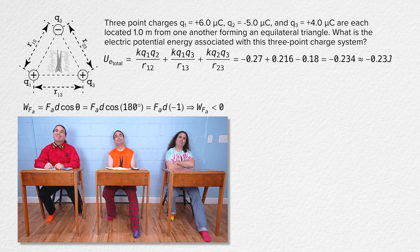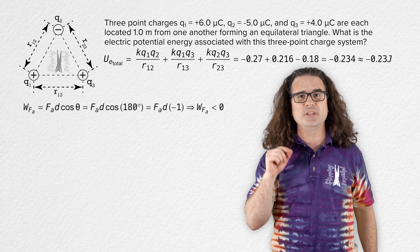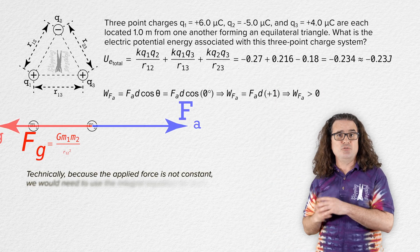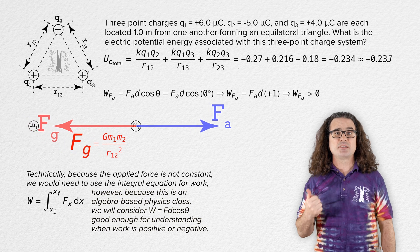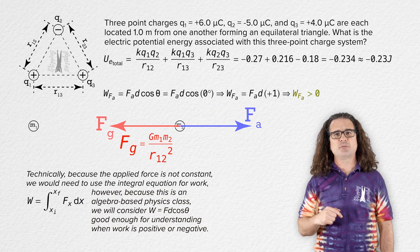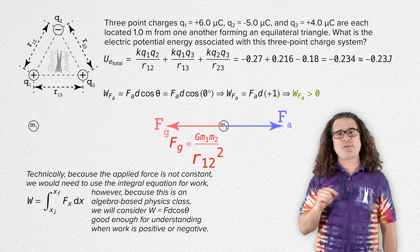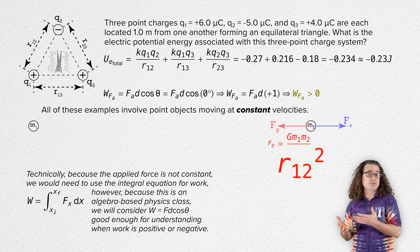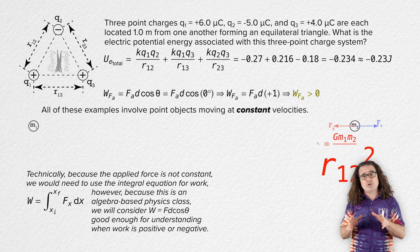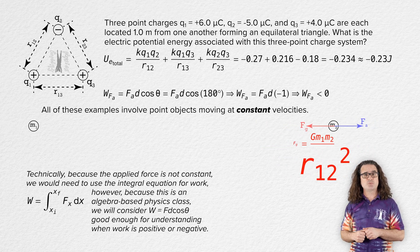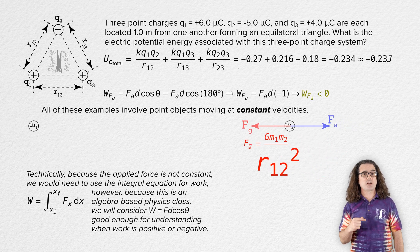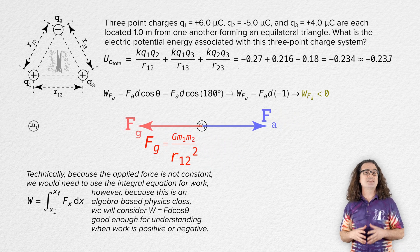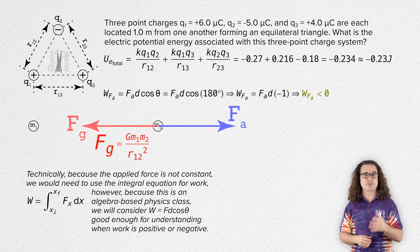The same thing is true for a system composed of only two point masses, mass one and mass two. In order to move mass two farther from mass one, an external force must do positive work on mass two, which puts gravitational potential energy into the two-mass system. In order to move mass two closer to mass one, an external force must do negative work on mass two, which removes gravitational potential energy from the two-mass system. The system now has less gravitational potential energy to be converted to other types of energy.